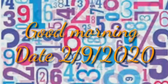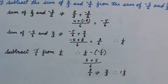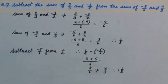Good morning students. Let's continue exercise 6a. Question number 12. Subtract the sum of 2 upon 3 and minus 3 upon 2 from the sum of minus 5 upon 6 and 2 upon 3.